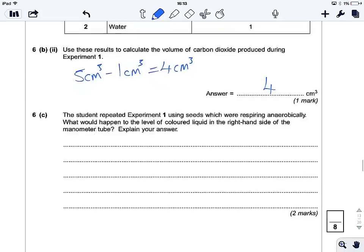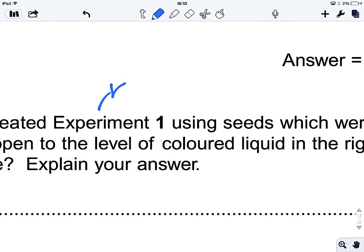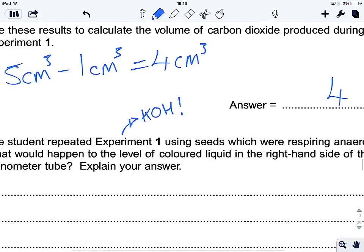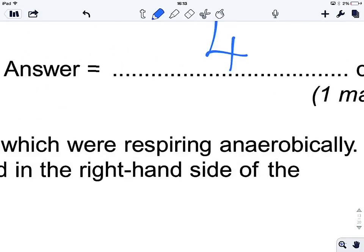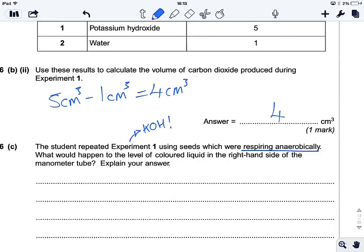Last question. The student repeated experiment one, this is with KOH, we better write that down, using seeds which were respiring anaerobically this time. So, anaerobically. There's our clue. What would happen to the level of the coloured liquid in the right-hand side of the manometer tube?